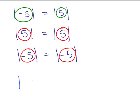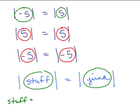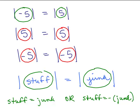Here's the key: if you have the absolute value of some stuff equal to the absolute value of some junk, then those two things are either exactly the same — so stuff equals junk — or they're opposites — so stuff equals the opposite of junk. Don't put a minus sign in front of both, because that brings you back to the original. I'm using 'stuff' and 'junk' to show it doesn't matter what's inside — it might be an x, a 2x minus 5, et cetera.